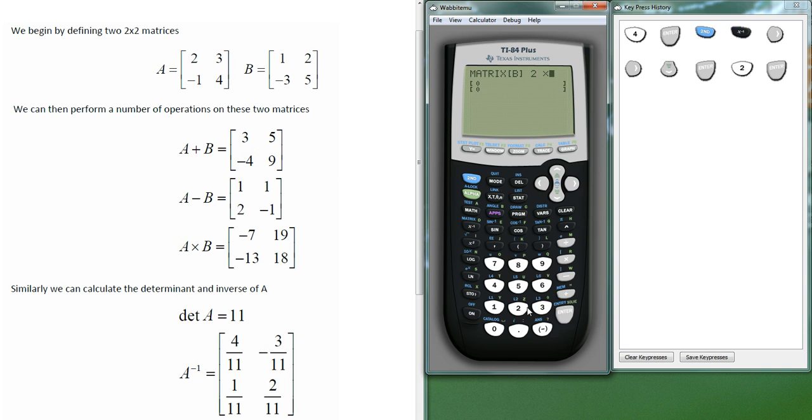Again, we want a 2x2. And then enter the values, so 1, 2, minus 3, and 5. And then we quit out of there.